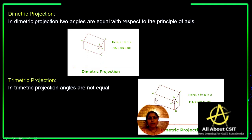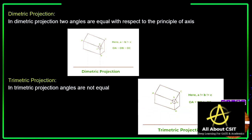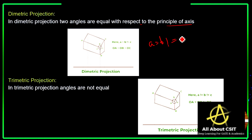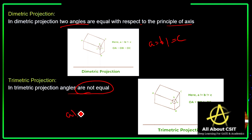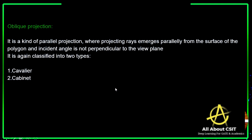In diametric projection, two angles are equal with respect to the principal axis: A equals B, but the second angle is not equal to C. In trimetric projection, all angles are unequal: A is not equal to B, and B is not equal to C.